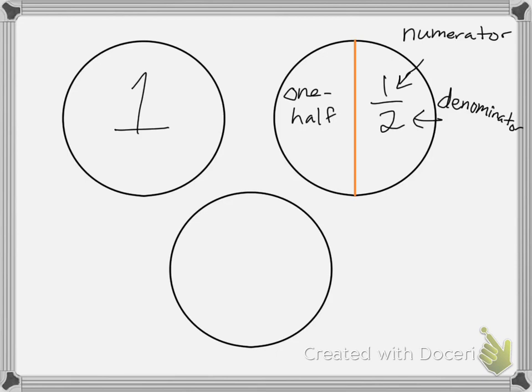All right, what if I take my circle and I fold it in half, and then I fold it in half again? So I fold it in half, and then in half again. You can see that I have four pieces, and each piece would be one fourth.